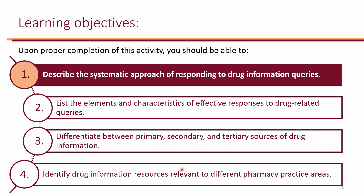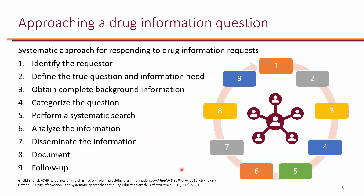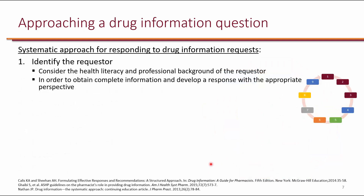The first learning objective is to describe the systematic approach of responding to drug information queries. There are nine steps in the systematic approach for responding to drug information requests. The first step is to identify the requester. It is extremely important to know who is requesting the information — is it the patient, the caregiver, or another healthcare professional? We need to consider the health literacy and the professional background of the requester.